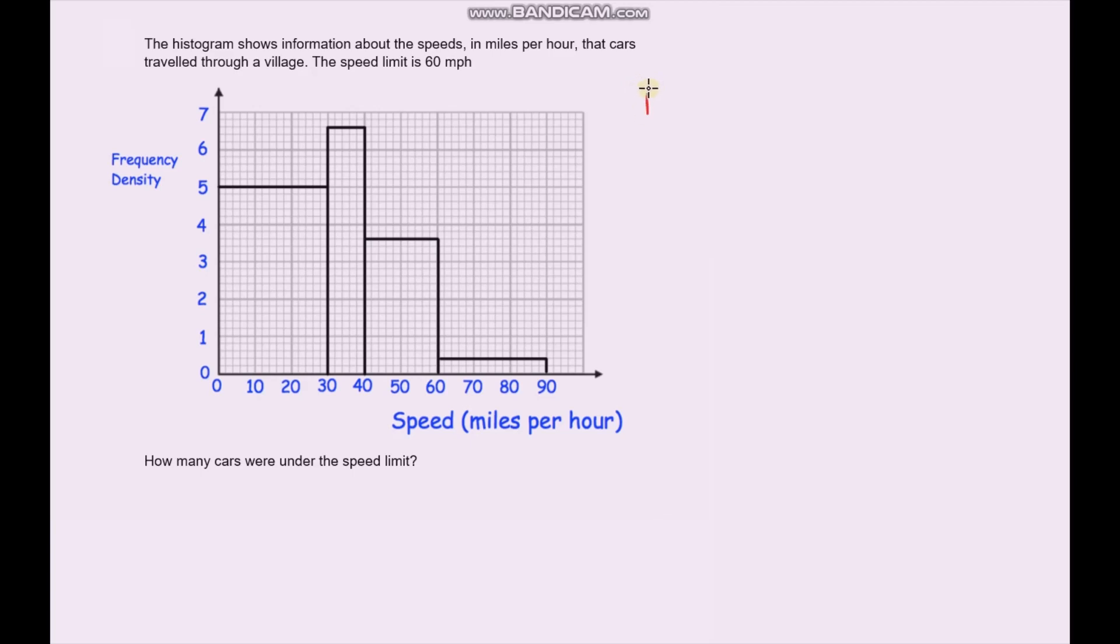So before we get stuck in, let's just write down our equation or formula for frequency density. Hopefully you remember this from previous videos. To calculate the frequency density, we take the frequency, total frequency, and we divide that by the class interval. You will need to know this formula and it's really important to understand it so that we can easily rearrange this to calculate the frequency or the class interval if the question asks for it.